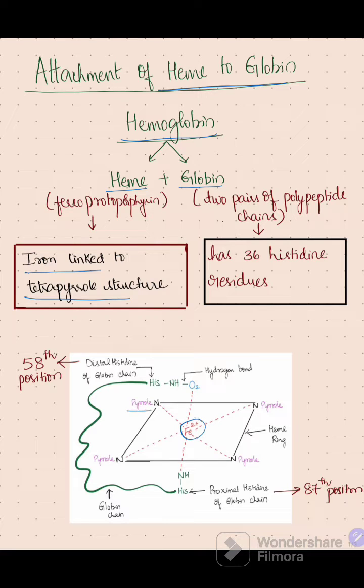There is an iron that is linked to four pyrrole rings, whereas globin is made up of two pairs of polypeptide chains. In these polypeptide chains, there are 36 histidine residues.